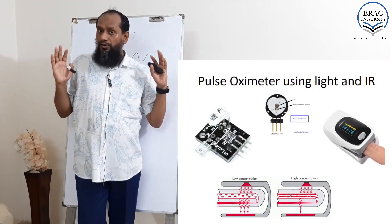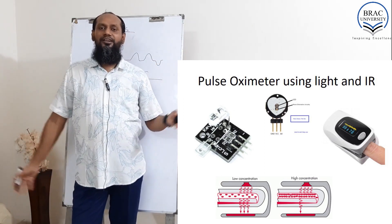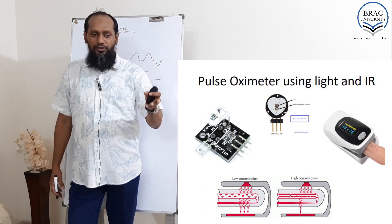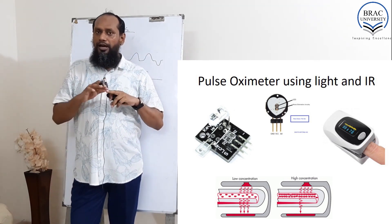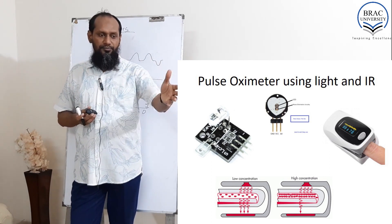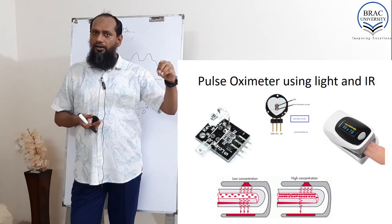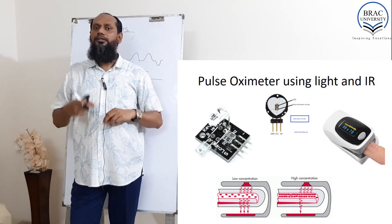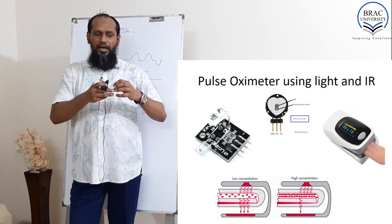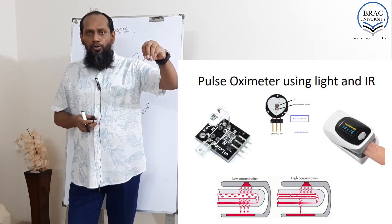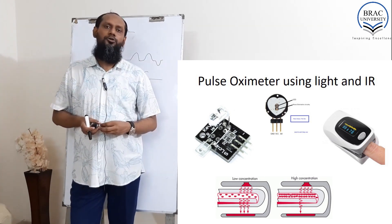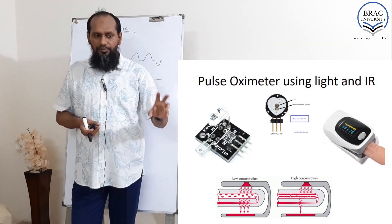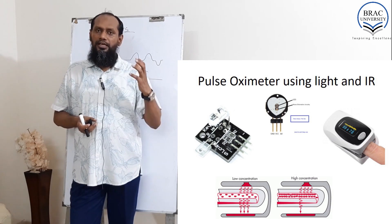The pulse oximeter is a very commonly used sensor. You can observe the blood flow or the red blood cell flow. In the first figure, the amount of red blood cells or oxygen was low, so most of the light could pass through the vessels. In the second figure, since the amount of red blood cells increased, almost no light could pass through.